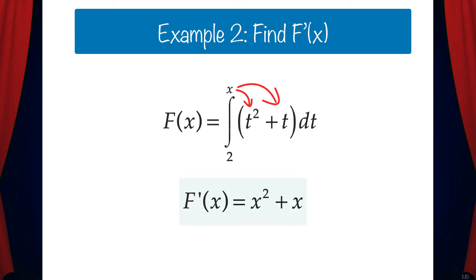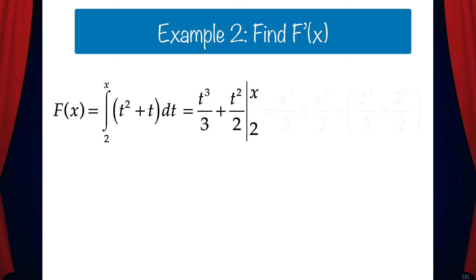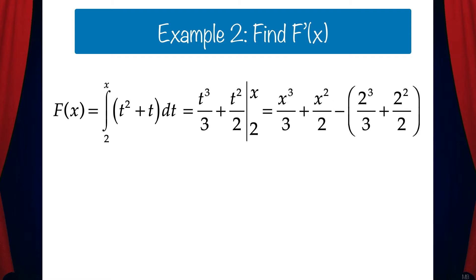Once again, just to show you that this does work, let's solve this the long way. If we find the antiderivative we get t cubed over 3 plus t squared over 2, and we'll evaluate that from 2 to x. That gives us x cubed over 3 plus x squared over 2 minus the quantity of 2 cubed over 3 plus 2 squared over 2. And if we take the derivative of this function we get x squared plus x.